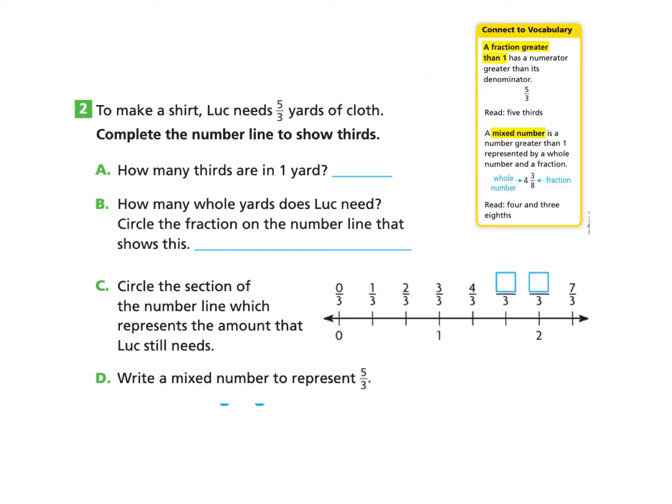Now let's take a look at part two. To make a shirt, Luke needs five thirds yards of cloth. Complete the number line to show thirds. You are welcome to pause this video and try this on your own and come back, or you can follow along with me. Part A asks how many thirds are in one yard. We know that in one yard, there will be three thirds to complete that whole yard. So we can write in the answer three thirds.